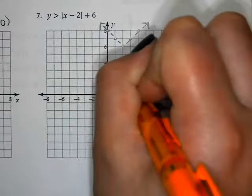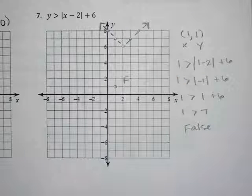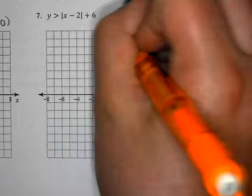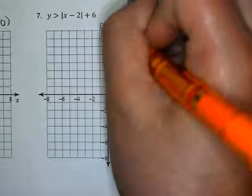And so the point is false. If the outside of the V is false, that means the inside of the V has to be true. And so you would be shading right in here.